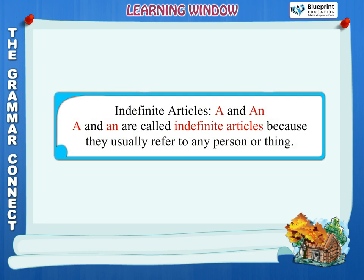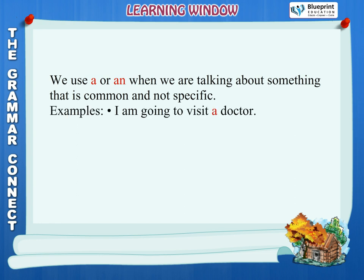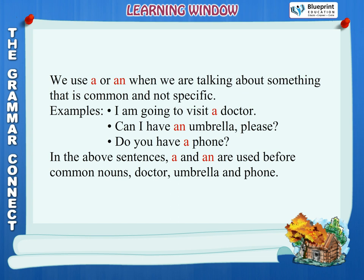Indefinite articles: a and an. A and an are called indefinite articles because they usually refer to any person or thing. We use a or an when we are talking about something that is common and not specific. Examples: I am going to visit a doctor. Can I have an umbrella please? Do you have a phone? In the above sentences, a and an are used before common nouns.